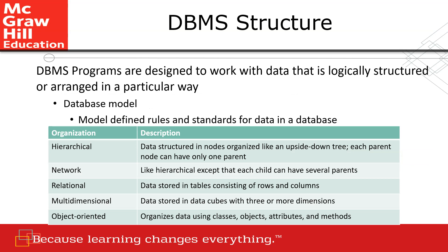There are several database management structures. The first generation is hierarchical — a data structure where nodes are organized like an upside-down tree, and each child node can have only one parent. Network is similar to hierarchical except each child node can have several parents. The third one is relational database, which is the one we are using right now — Access database is a relational database.